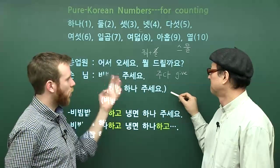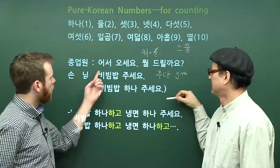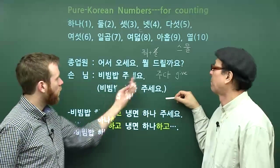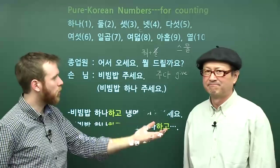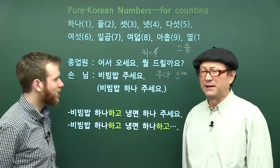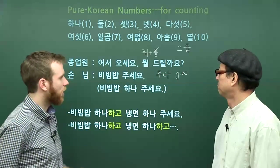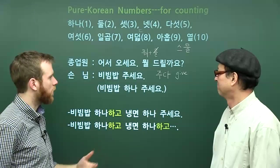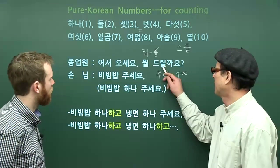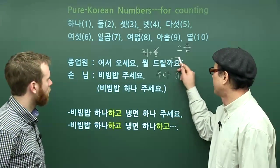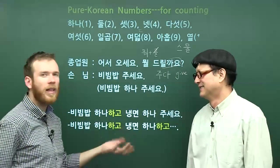So, 어서 오세요 — 'Come on in.' 뭘 드릴까요 — 'What can I get you? What shall I give you?' That's kind of like a question: 'What shall I give you?' In spoken Korean, subject markers and object markers are often just cut out, so it's important to recognize that if you're listening. So you'll often just hear: 뭐 드릴까요?